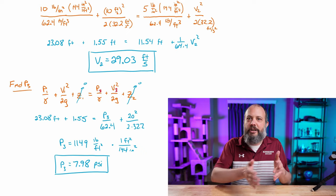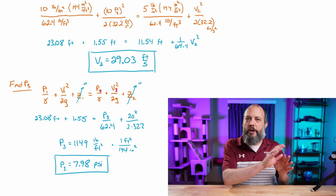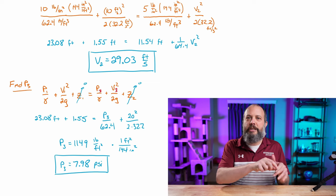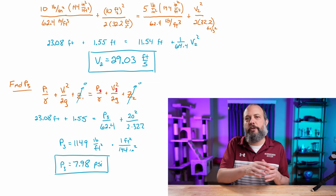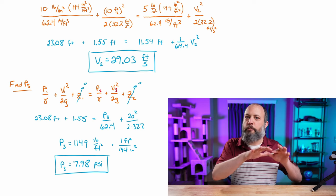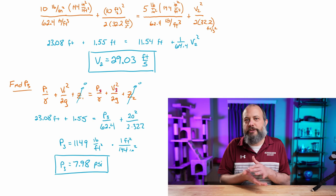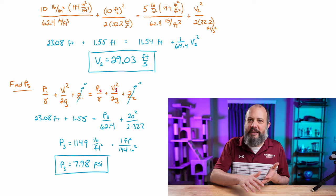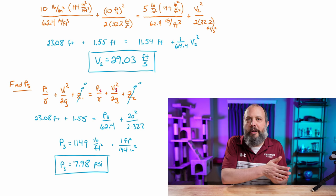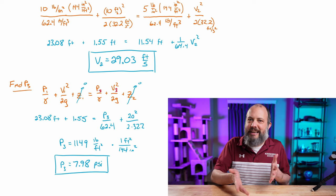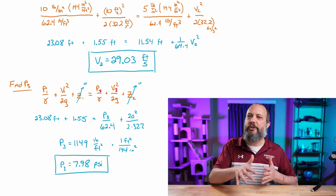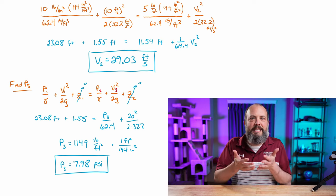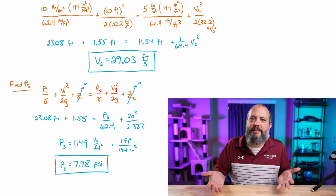And again, we should be able to check whether the answer makes sense. Should pressure have gone up or gone down? So velocity at point 1 was 10 at point 3 is 20. So some energy was converted into velocity energy. So velocity energy went up, then pressure energy must have gone down. So the final answer has to be less than 10 PSI. Pressure has to be decreasing in order for velocity to speed up.